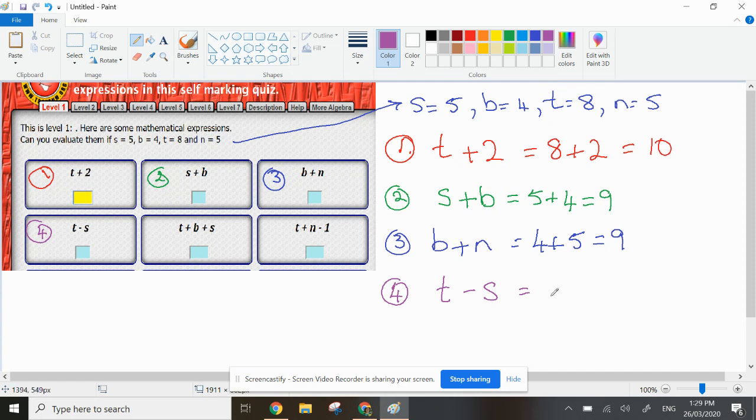It says take away this time, and S, S is the same as 5 using the decoding. So 8 minus 5 is 3. That's what you call substitution, and evaluating the answers for them.